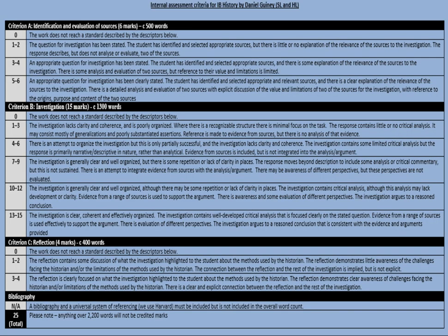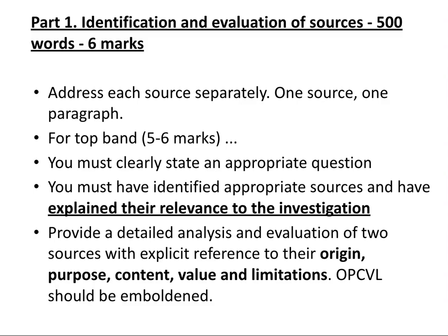You can see the mark allocations for each of the three sections on the rubric here — please note you are expected to include a bibliography, although you don't technically get a mark for that. The first section is Part One: the identification and evaluation of sources. You should spend about 500 words on this and it's worth six marks. Address each source separately — one source deserves one paragraph — and they should hopefully be sources that disagree with each other. For the top band of five or six marks, you must clearly state an appropriate question, identify the sources and explicitly explain their relevance to the investigation, and then provide a detailed analysis and evaluation of two sources with explicit reference to their origin, purpose, content, value, and limitations. OPCVL should be emboldened — don't make your teacher or the examiner comb for it.